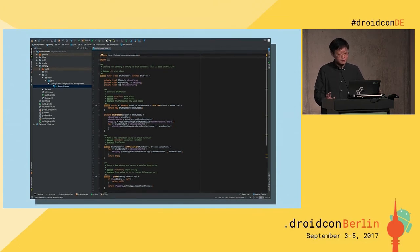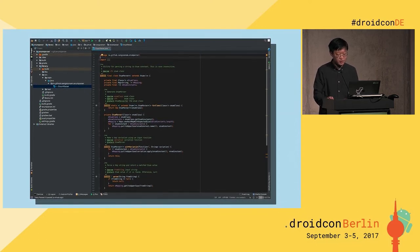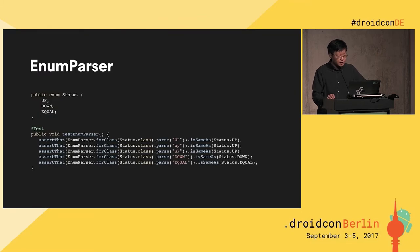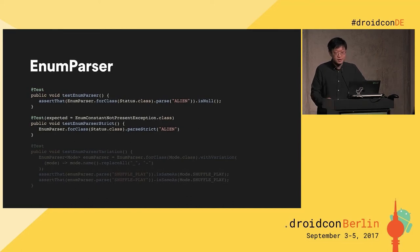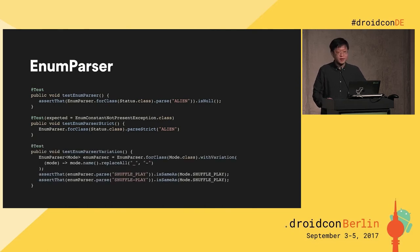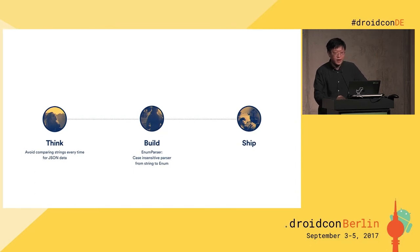Here is the source code about the enum parser — I'm not going to explain every line, because the focus is more about how to release your Android library. I want to highlight some unit tests. The class is called EnumParser with a method called forClass. It ignores the case, so every different variation maps to the status up. If the value is unknown, it returns null by default. There is another method called parseStrict that throws an exception if the value is unknown. It also supports dash, which is not supported by the enum.